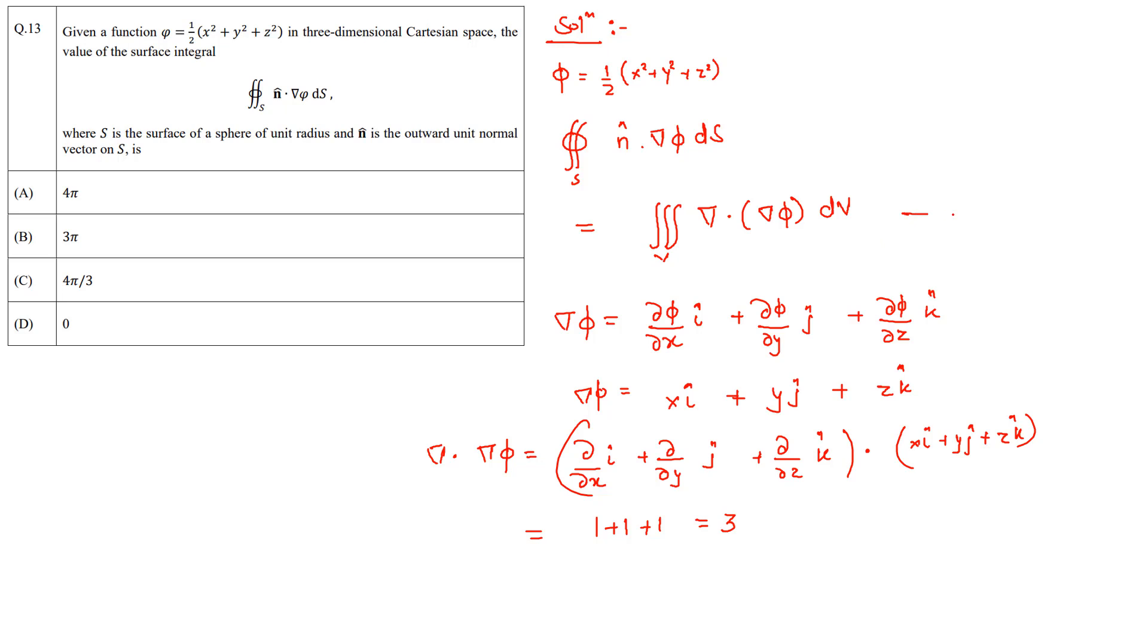Now substituting this in equation 1, we will get that this surface integral ∫S n̂ dot grad φ dS will be equal to ∫ 3 dV, that will be equal to 3 times V.